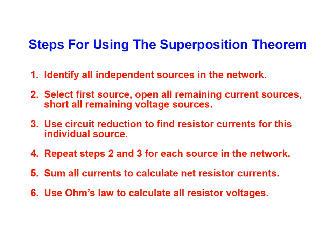Step one is to identify all independent sources in the network. Step two is to select a single source and open all remaining current sources and short-circuit all remaining voltage sources in the circuit. In step three you will then use circuit reduction to calculate the currents for the resistors in the circuit. In step four, steps two and three are repeated for every source in the circuit. In step five we calculate the algebraic sum of the currents resulting from each individual source to arrive at a final resultant net current for each resistor. For the last step of the process we use Ohm's law to calculate the resistor voltages based on the net currents.